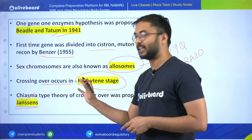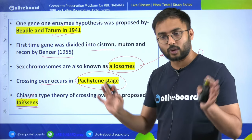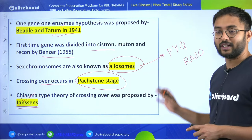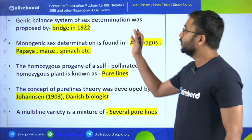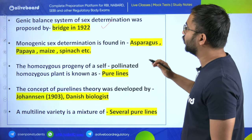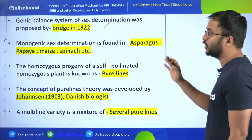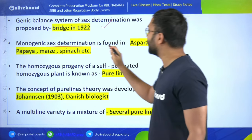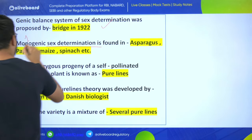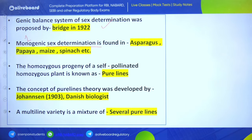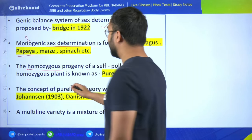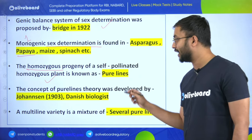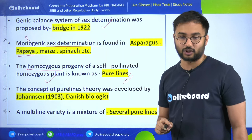If you want to know more about any statement here, you can take a screenshot so you can revise easily. Genetic balance theory of sex determination was proposed by Bridges in 1922. Monogenic sex determination is found in asparagus, papaya, maize, spinach, etc. The homozygous progeny of a self-pollinated homozygous plant is known as pure lines.